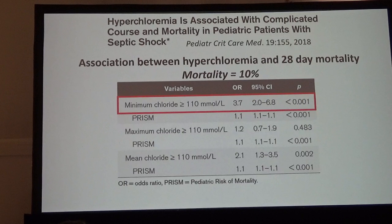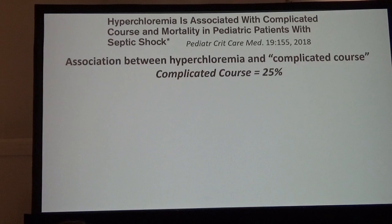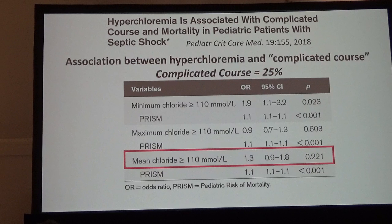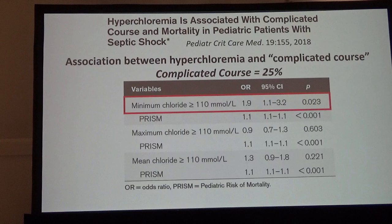Erin also looked at an outcome called 'complicated course,' which is a composite of mortality as well as persistent multi-organ failure at seven days, with an overall rate of 25%. There was no effect with maximum or mean chloride, but if your minimum chloride was greater than 110, there was an association with this composite outcome of complicated course.